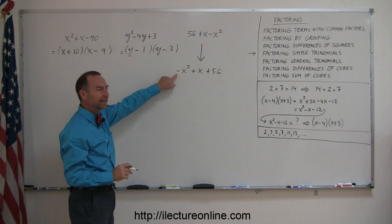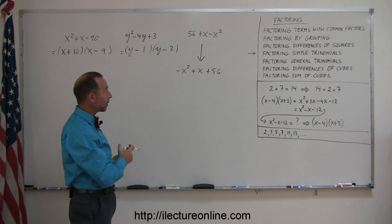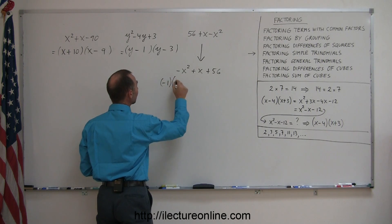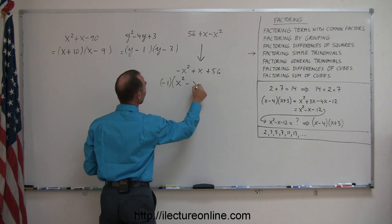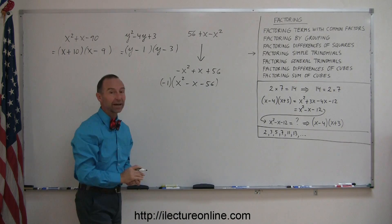But you have a negative in front of the x squared term, and I recommend that you don't leave it like that. So you're going to factor out a negative 1. When you do that, you write negative 1 times, changing all the signs here, gives you a positive x squared, a minus x, and a minus 56. Now you go ahead and factor the rest there.